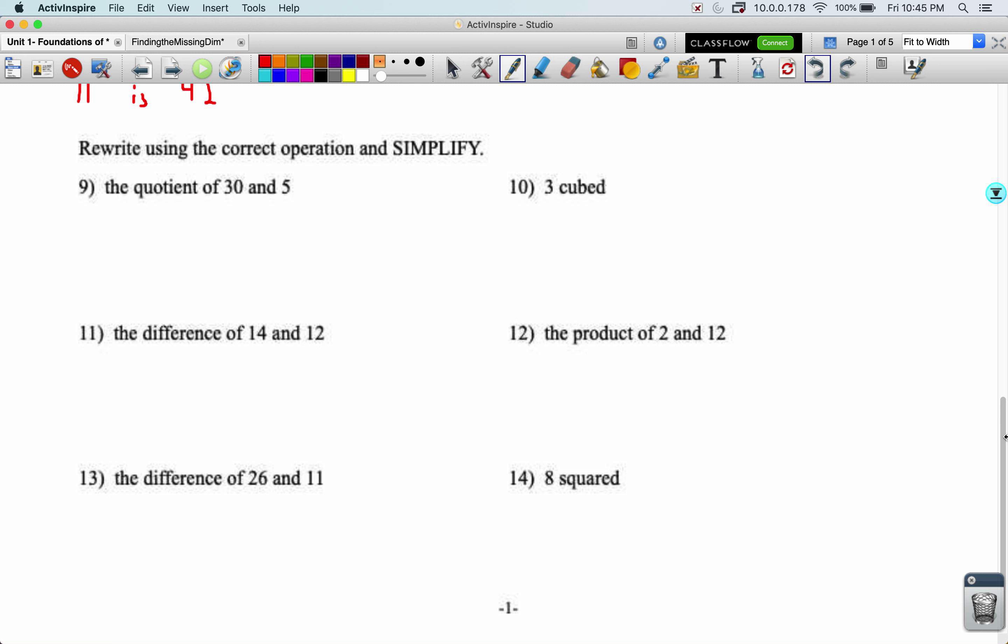Nine through 14 ask us to rewrite using the correct operation and then simplify. So the quotient of 30 and five, I rewrite that as 30 over five. But now this can be simplified because 30 can be divided by five and it becomes a six.